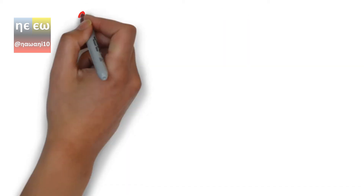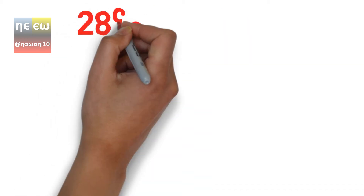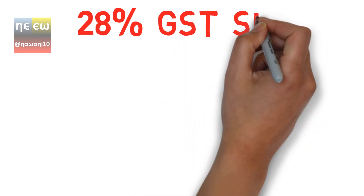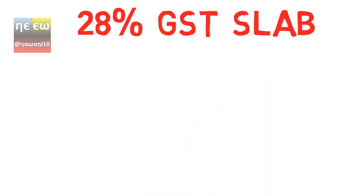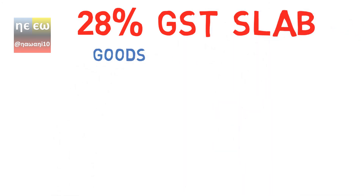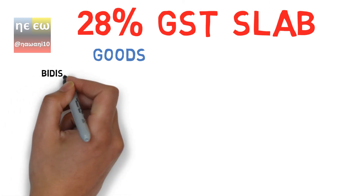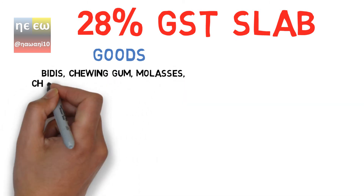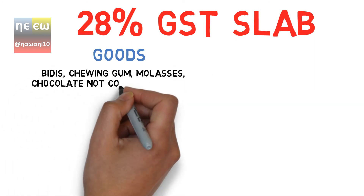In the 28% GST slab, 28% tax will be imposed on the following goods and services. This is the highest slab under the GST system.